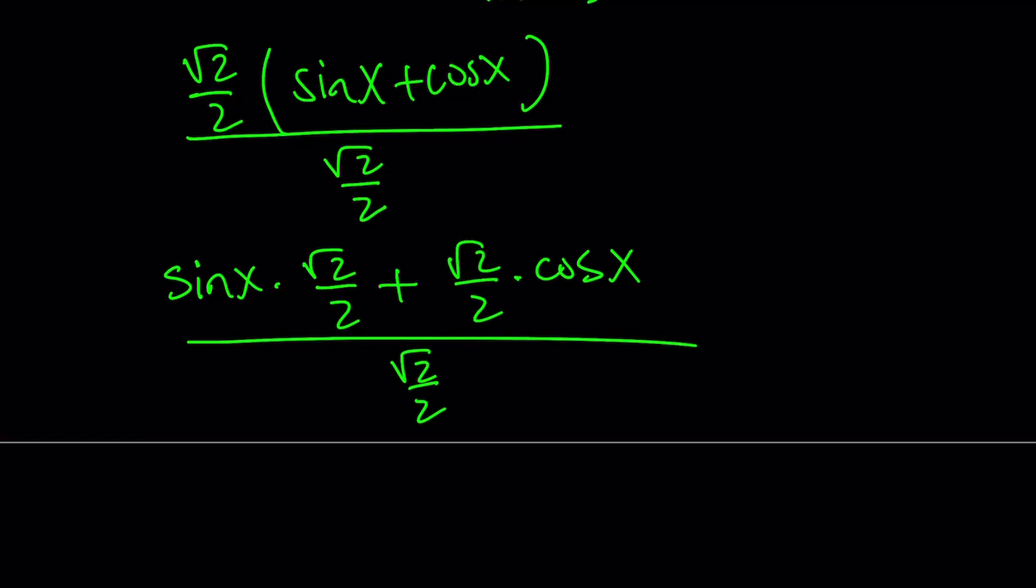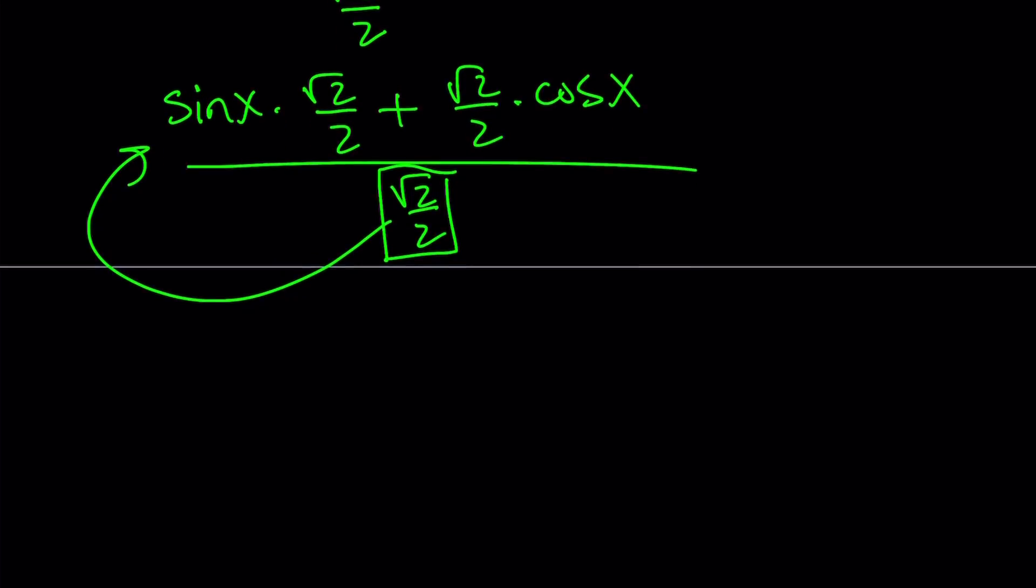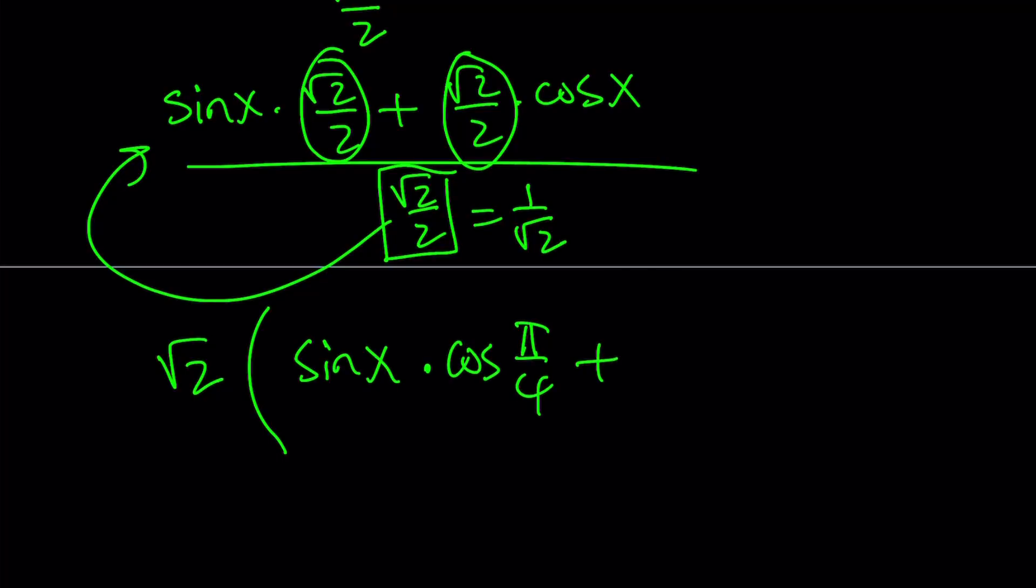Now, obviously, at this point, this is 1 over root 2, so you can go ahead and flip that and write it as root 2 times this quantity. Let's bring this root 2 over here. Since this is equal to 1 over root 2, I can do that. And now, replace the root 2 over 2 with something trigonometric. How about replacing the first one with cos(π/4) and the second one with sin(π/4). Since those are equal, it doesn't matter which one is which.